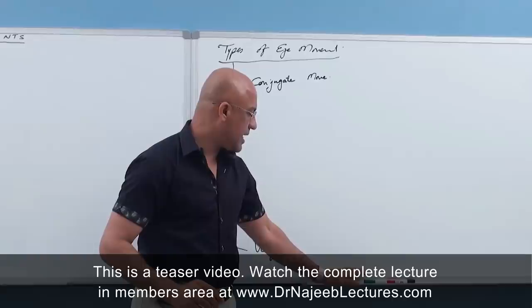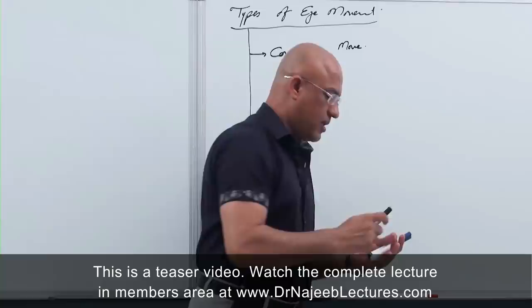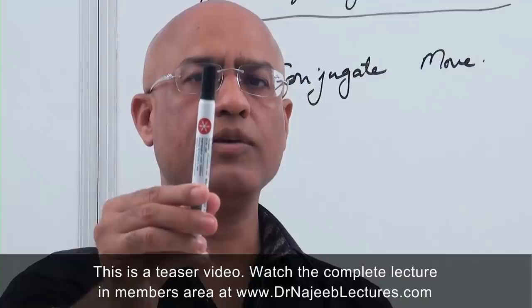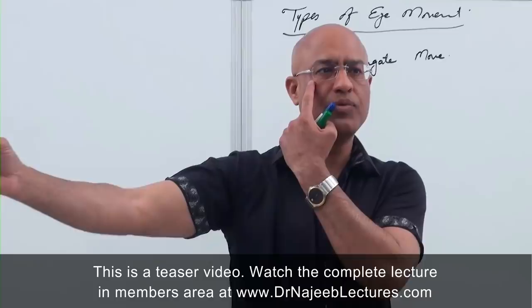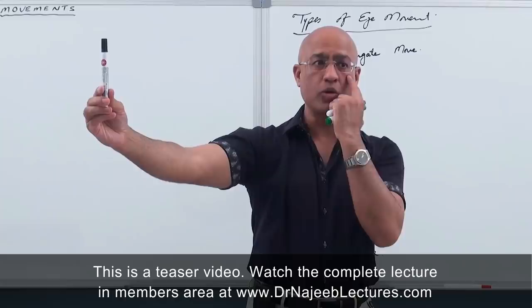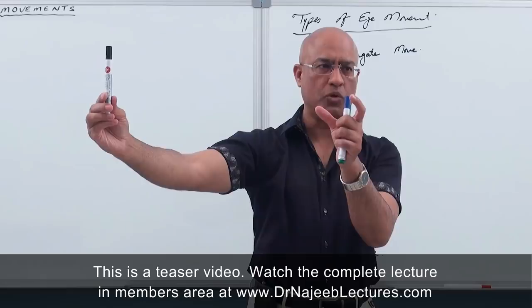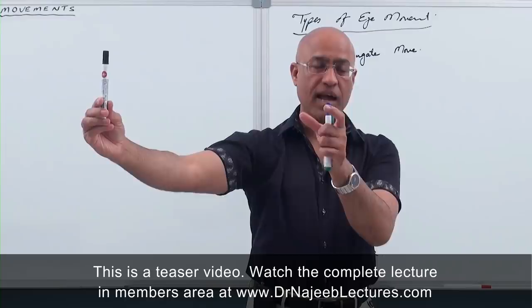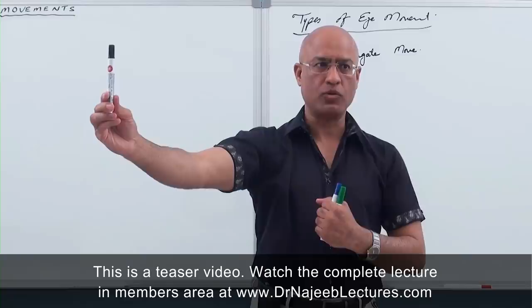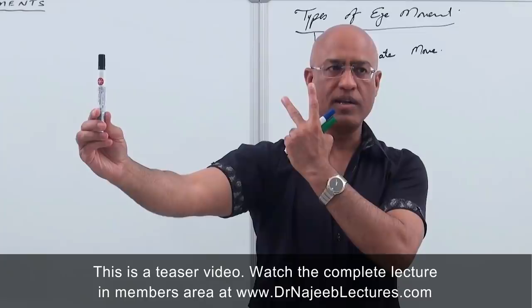What are conjugate eye movements? Let's suppose I am focusing on an object. If that object is shifted to the right side, one eye will move outward and the other eye will move inward. But both eyes, to keep focus on that object, should move in a conjugate fashion — meaning their visual axes remain parallel and both move the same degree.